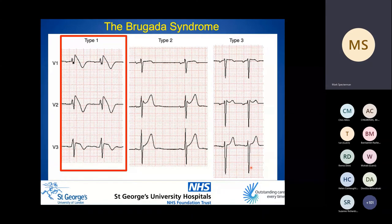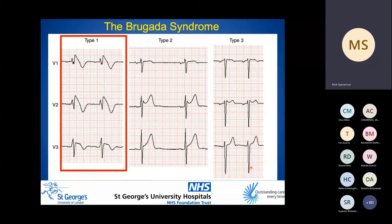Only a spontaneous and fulminant type 1 Brugada ECG pattern is diagnostic of Brugada syndrome. This is characterized by a coved ST segment elevation displaying J-point and ST segment elevation greater than or equal to 2 millimeters or 0.2 millivolts, followed by negative T waves. This can be in any right precordial lead V1 to V3 in either the second, third, or fourth intercostal space.